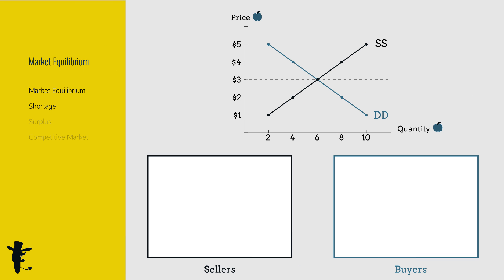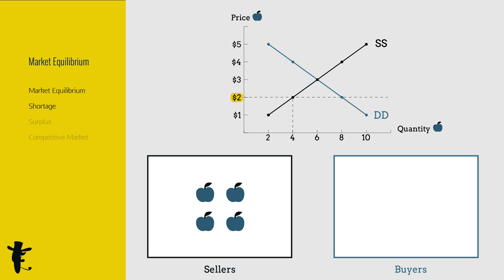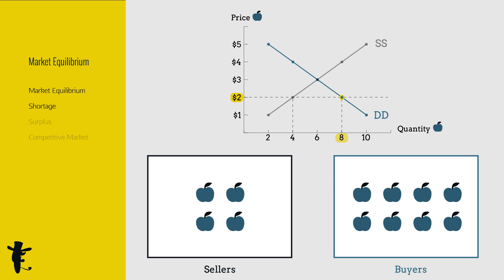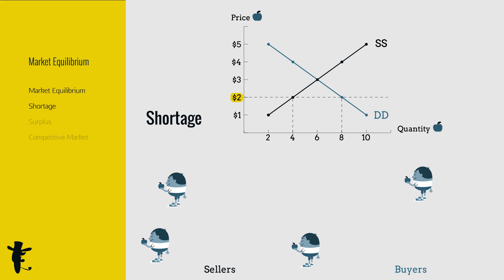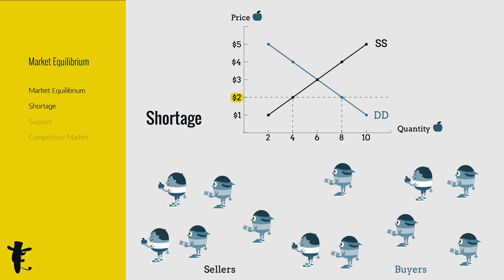At a price below market equilibrium, say at two dollars, sellers want to sell this amount, buyers want this amount. There is a shortage. As sellers, with so many customers fighting to buy your goods, sit back and wait and jack up the price.